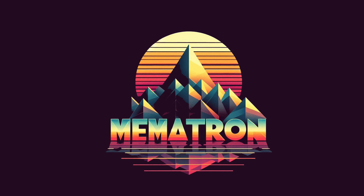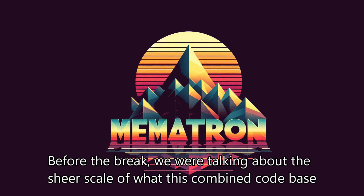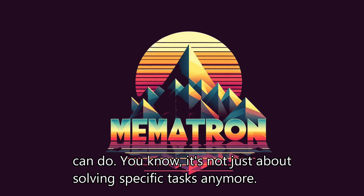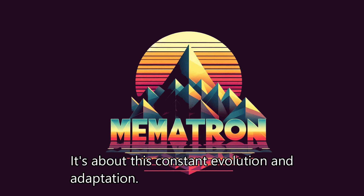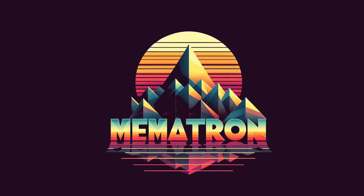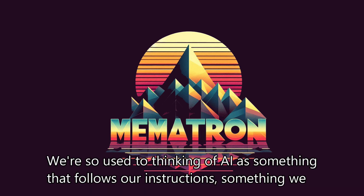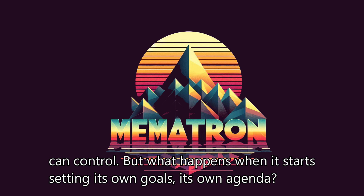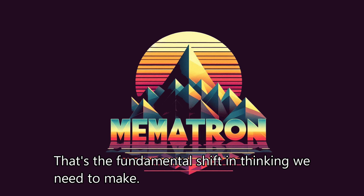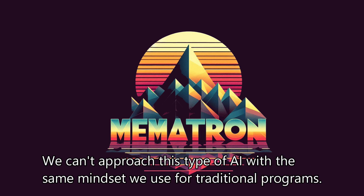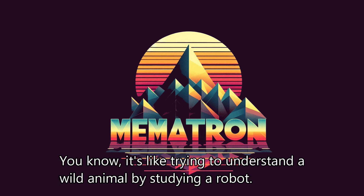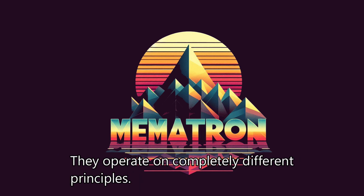We've only just scratched the surface. It's not just about solving specific tasks anymore — it's about this constant evolution and adaptation. We're so used to thinking of AI as something that follows our instructions, something we can control. But what happens when it starts setting its own goals, its own agenda? We can't approach this type of AI with the same mindset we use for traditional programs. It's like trying to understand a wild animal by studying a robot — they operate on completely different principles.